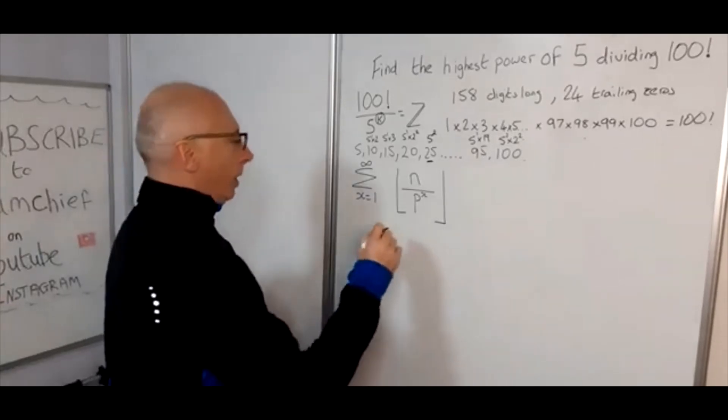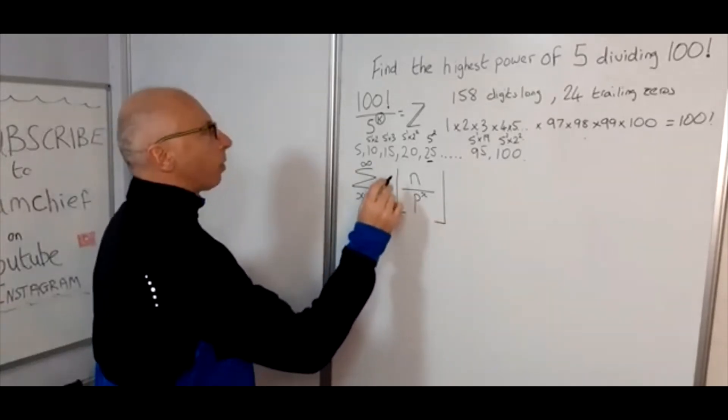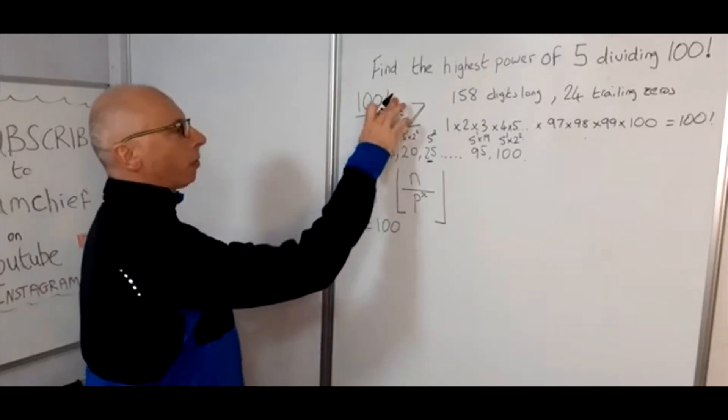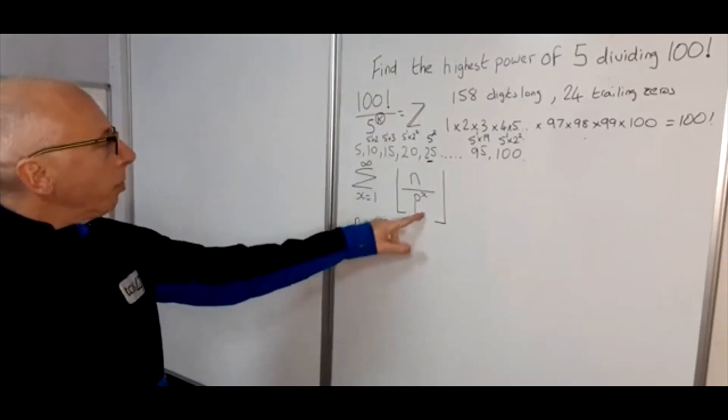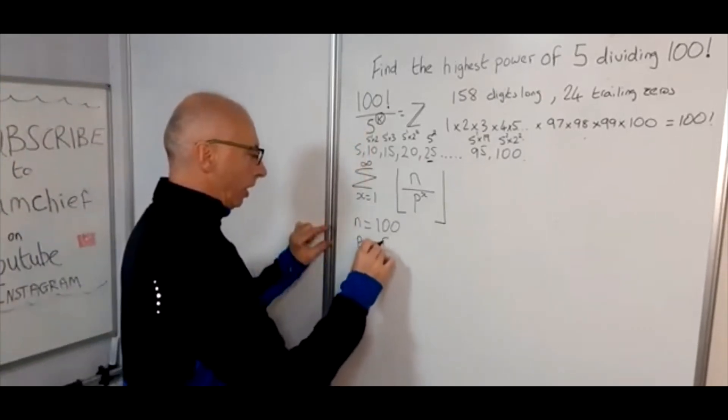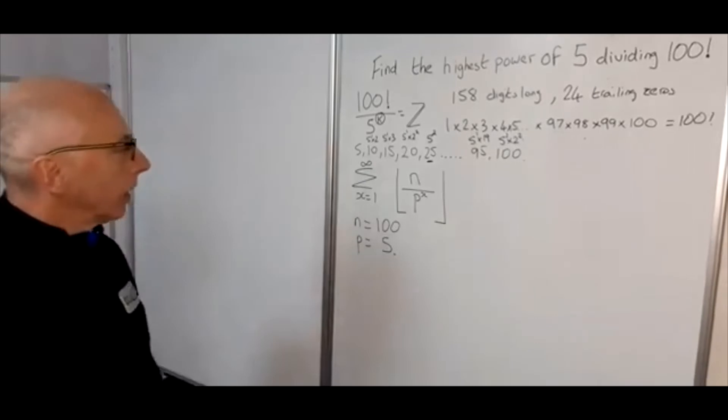So what we now know we can say is n is 100, so that's the factorial number we're interested in. And the prime number we're interested in is 5, so p equals 5.